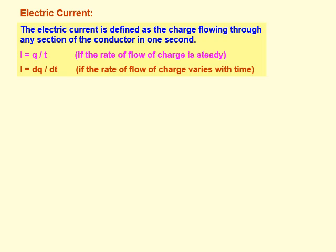If the rate of flow of charge varies with respect to time, then current I is equal to dq by dt. This is time varying electric charge, so current is also called time varying or variable current.